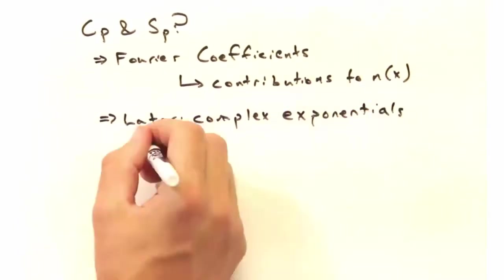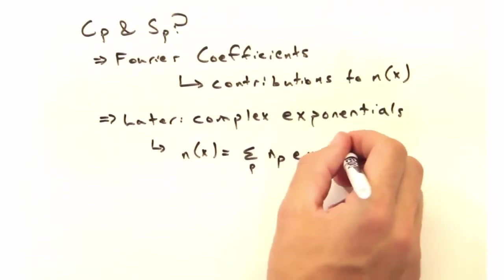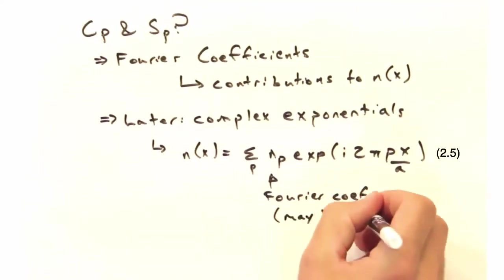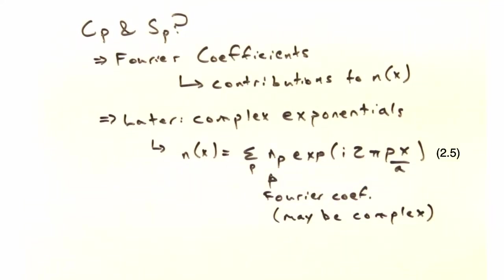Also in later videos, we'll use complex exponentials instead of sines and cosines for our Fourier series. Where the coefficient is allowed to be complex and we sum over all values of p.